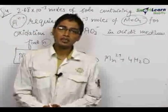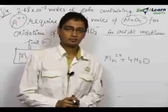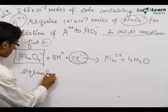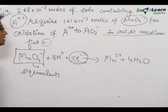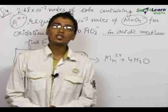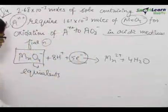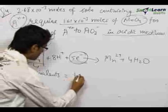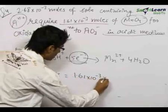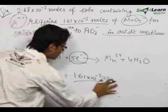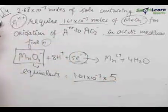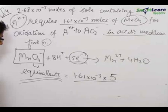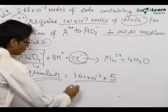By N-factor, we mean the number of electrons which are getting transferred during the given reaction. The number of equivalents of any substance is equal to the number of moles of that substance multiplied by the N-factor. So, the number of equivalents of MnO₄⁻ equals the number of moles of MnO₄⁻, which is 1.61 × 10⁻³, multiplied by the N-factor of 5.